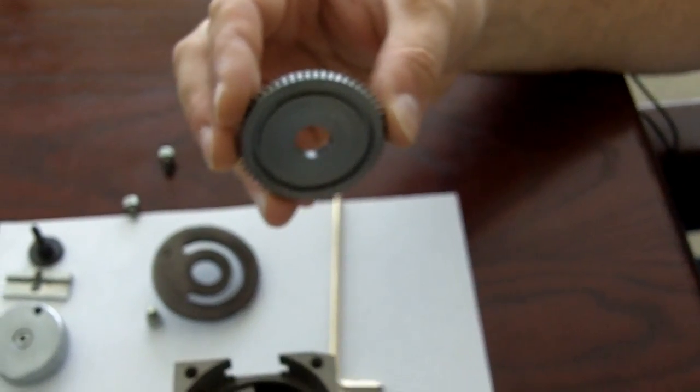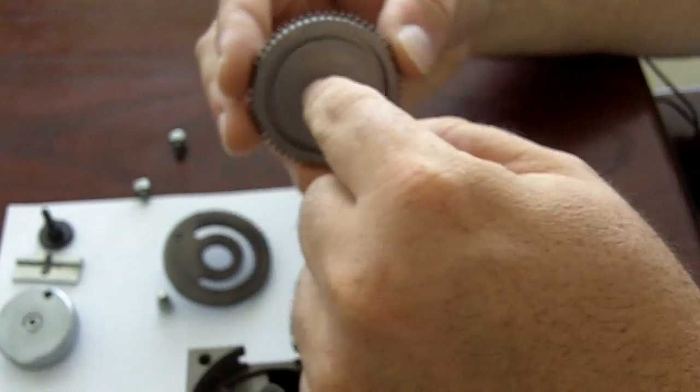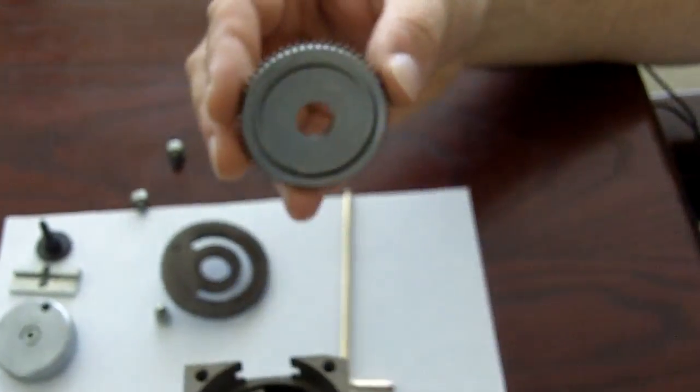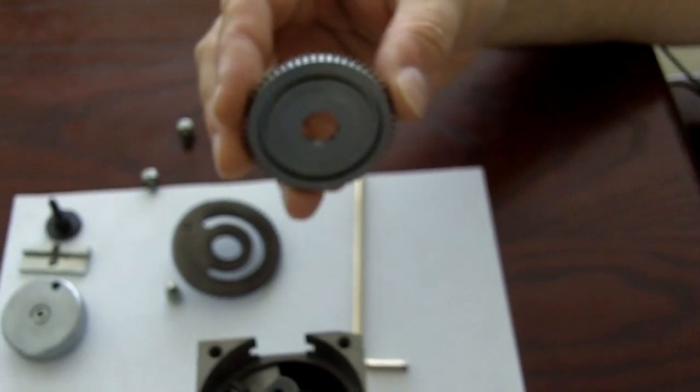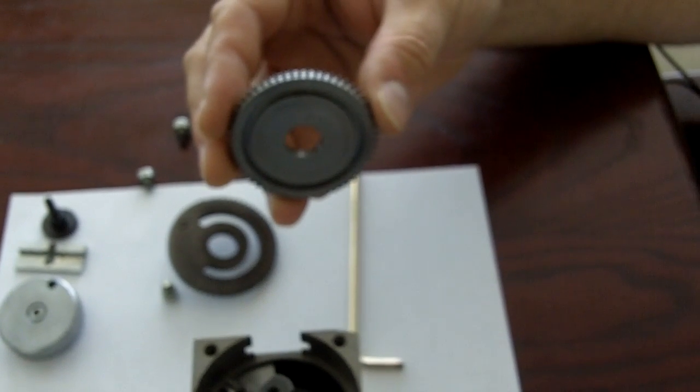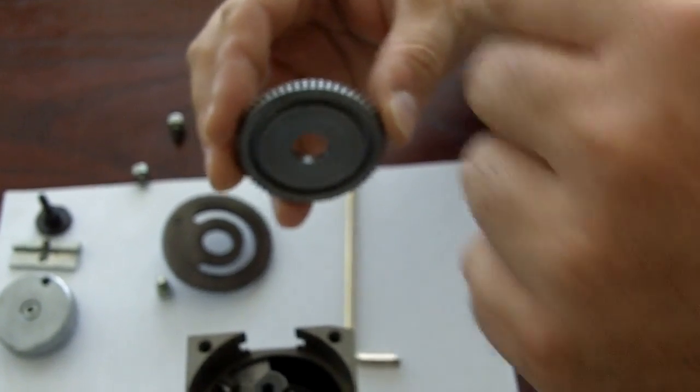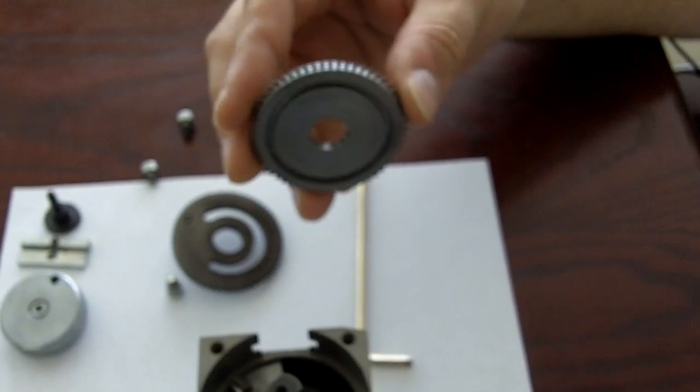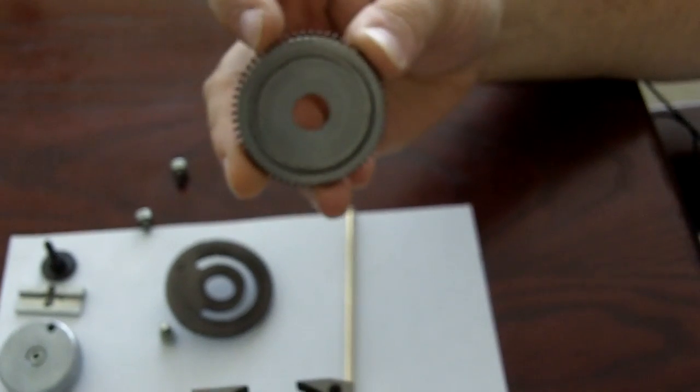If you have any broken teeth, knock the studs out through the escapement. Then using Loctite 638 adhesive, coat your new pin. Assemble it through the hole until the shoulder hits flush with the wheel.